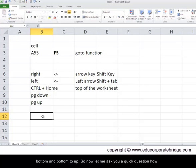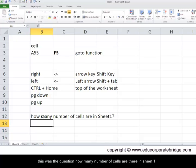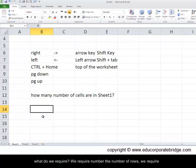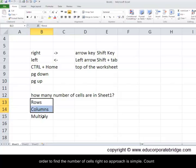Now let me ask you a quick question. How many number of cells are in sheet 1? In order to calculate, let's say if this was the question, how many number of cells are there in sheet 1? What do we require? We require the number of rows. We require the number of columns. And we may have to multiply the rows with the columns in order to find the number of cells.